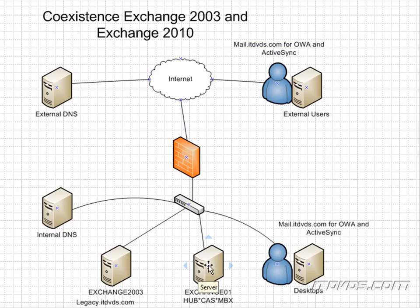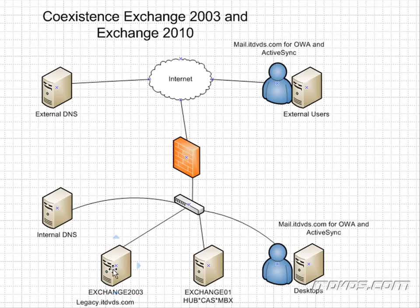The request hits our Exchange 2010 client access server, which will know if that mailbox is on our Exchange 2010 environment — in which case they'll use Outlook Web App for Exchange 2010. But if the mailbox is on an Exchange 2003 server, it's going to automatically redirect to legacy.itdbds.com, and the user really won't know the difference — they'll be using Outlook Web Access on Exchange 2003. The same goes for ActiveSync, so it's really going to be seamless to the user.